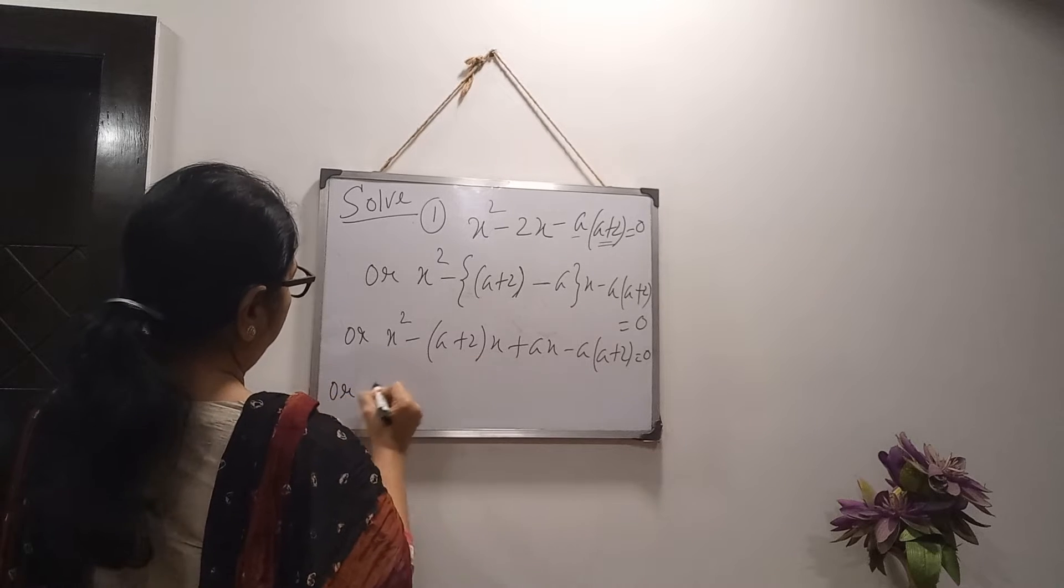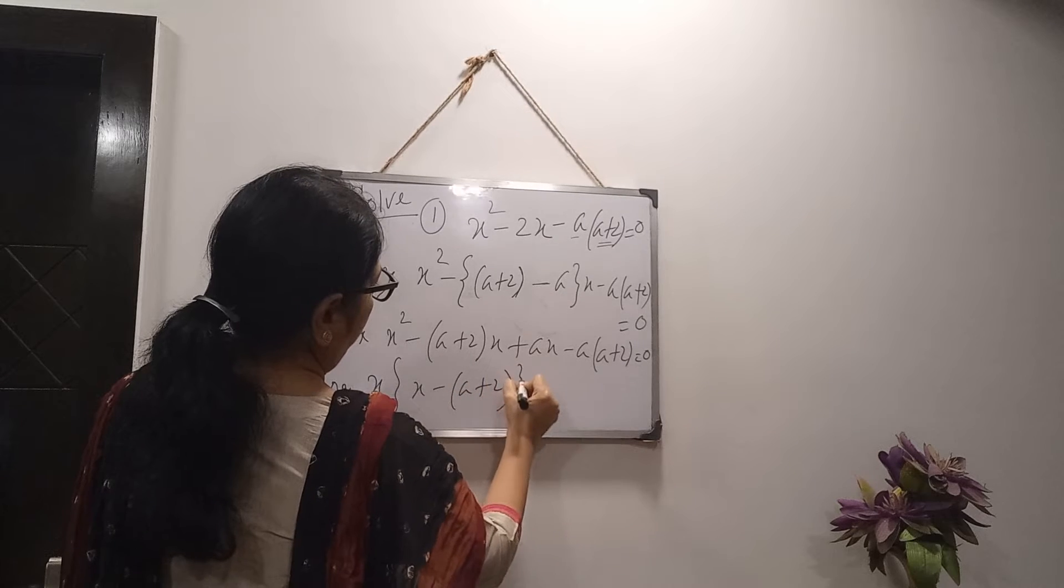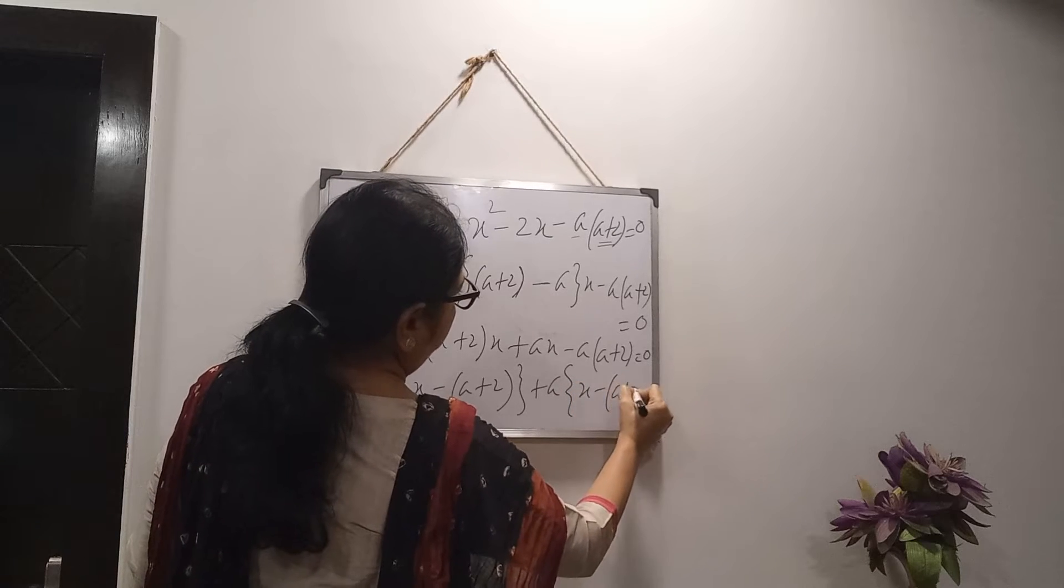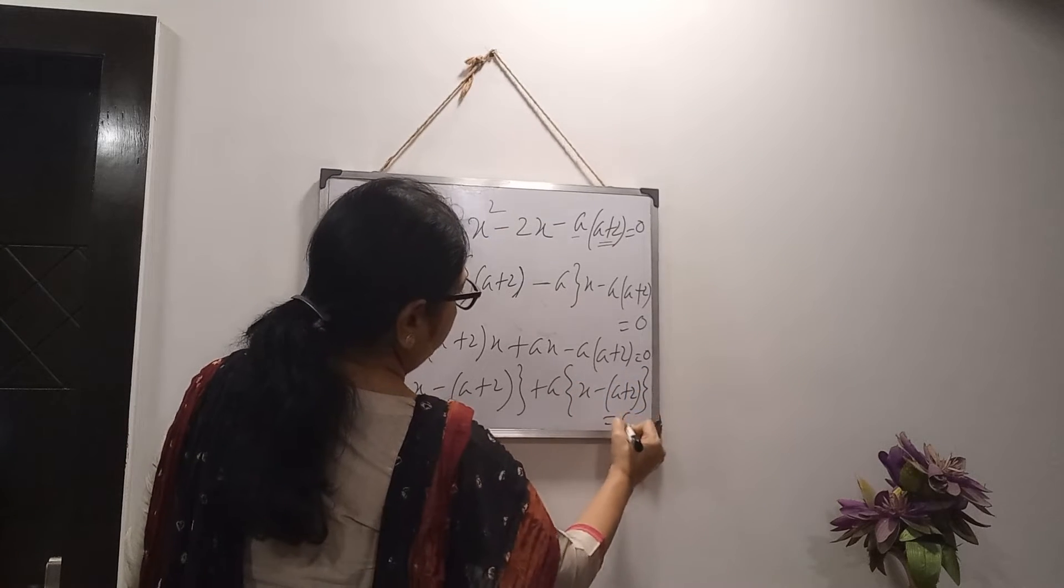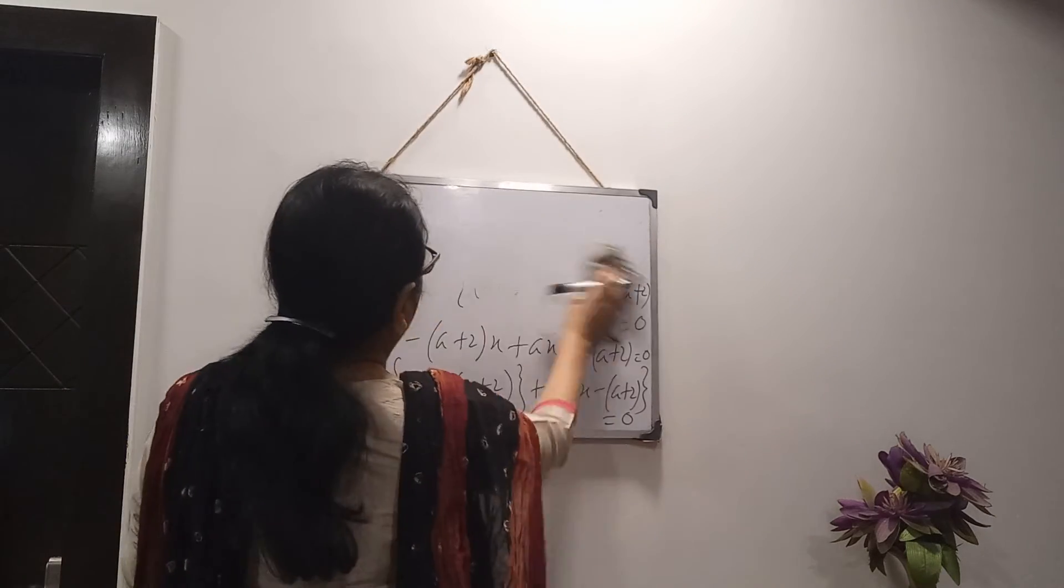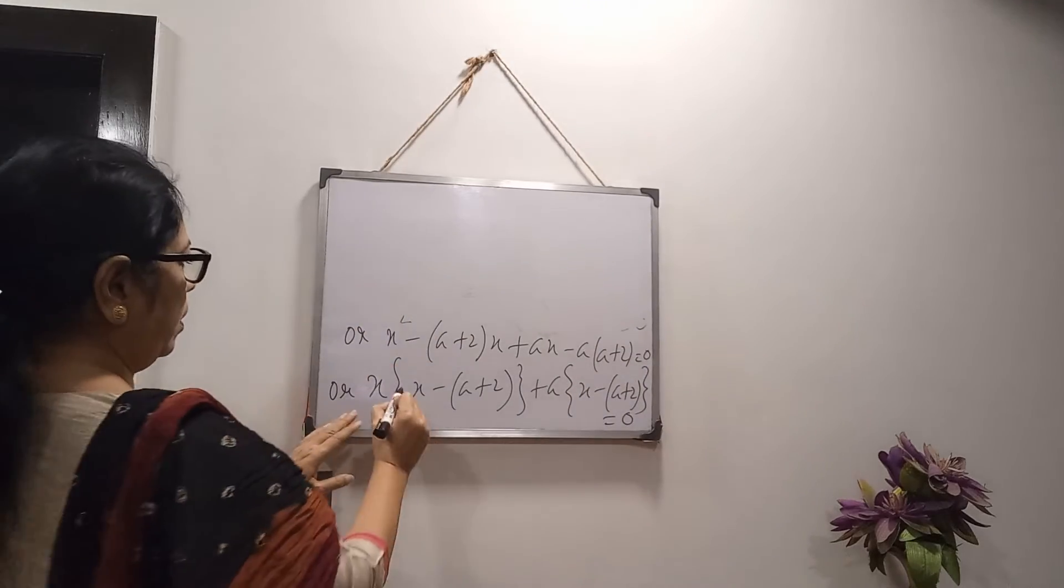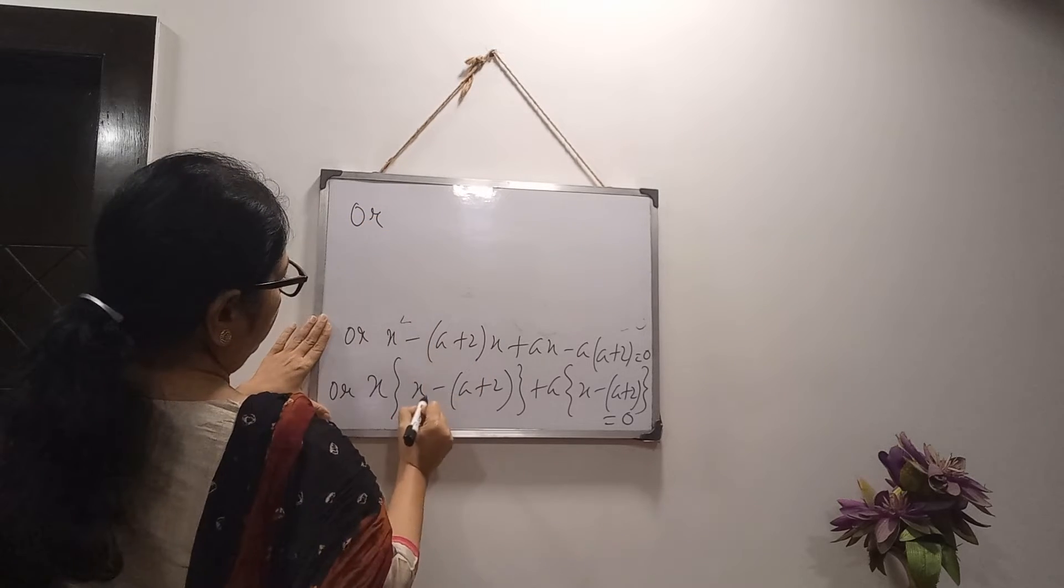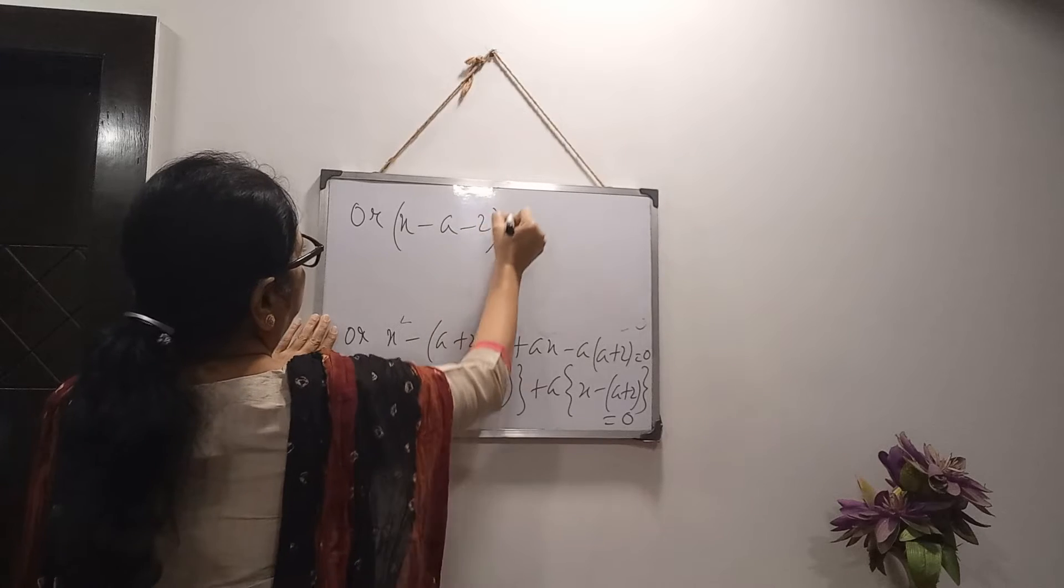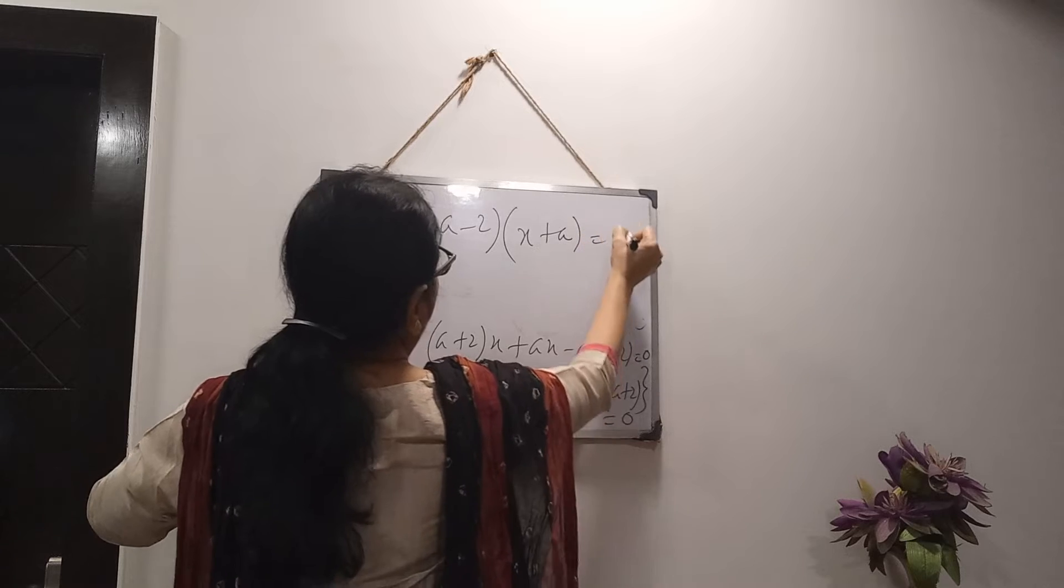Or, what we can take common from here, x. So, x minus a plus 2. And from here, plus a. So, we are getting x minus a plus 2 equals to 0. Then, my factors are coming. x minus a. I am opening the bracket. Minus 2. And from here,